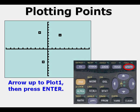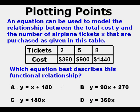Now let's look at a problem. An equation can be used to model the relationship between the total cost y and the number of airplane tickets x that are purchased as given in this table. Which equation best describes this functional relationship?